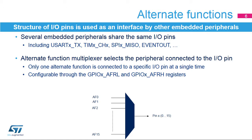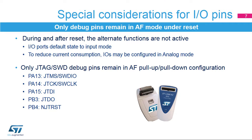Several integrated peripherals, such as the USART, timers, SPI, and others, share the same I.O. pins in order to interface with the external environment. Peripherals are configured through an alternate function multiplexer, which ensures that only one peripheral is connected to an I.O. pin at a single time. This selection can be changed while the application is running through the GPIOX AFRL and AFRH registers. During and after reset, the alternate functions are not active.